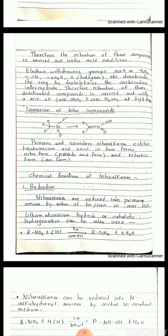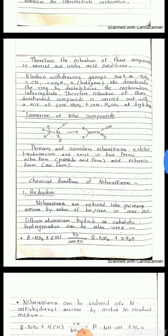Next we will see the isomerism of nitro compounds. Primary and secondary nitroalkanes exhibit tautomerism and exist in two forms: the nitro form (pseudo acid form) and the nitronic form (acid form).